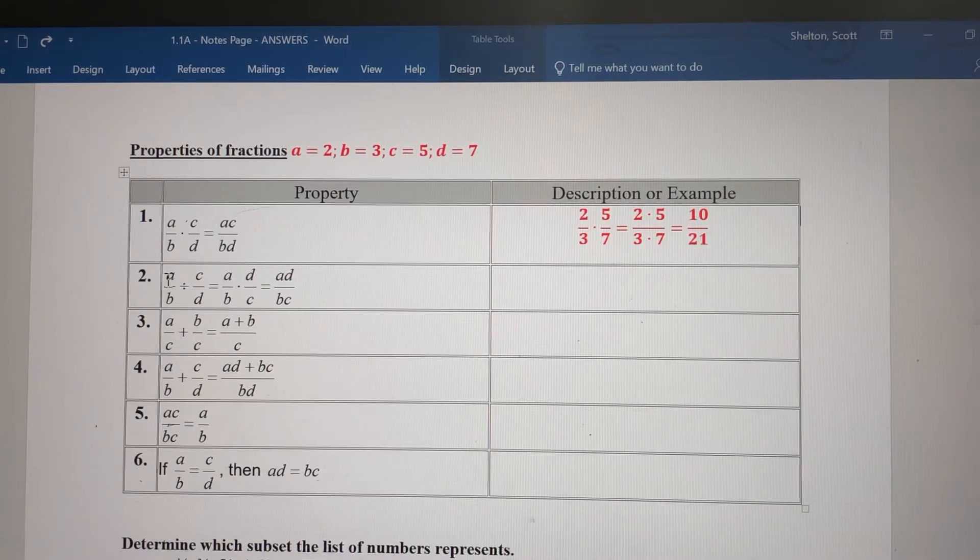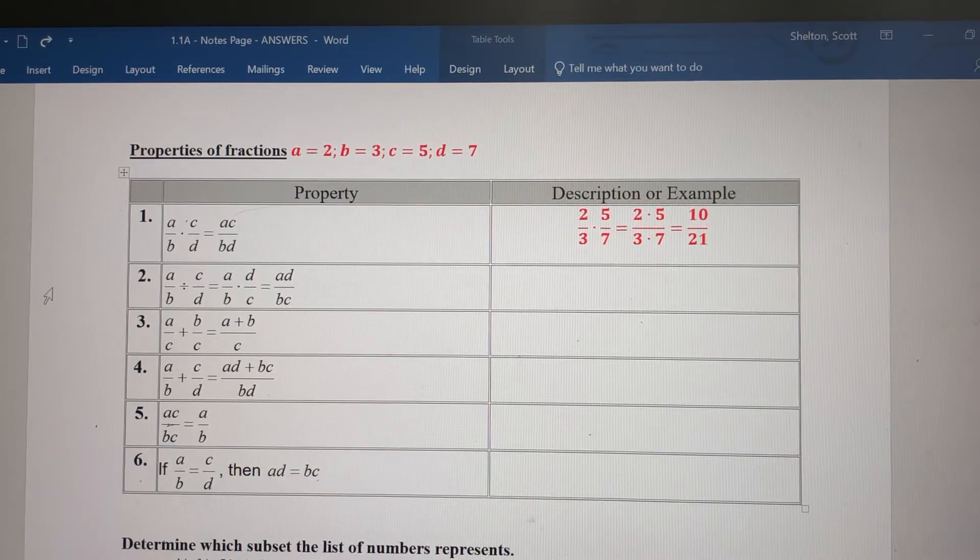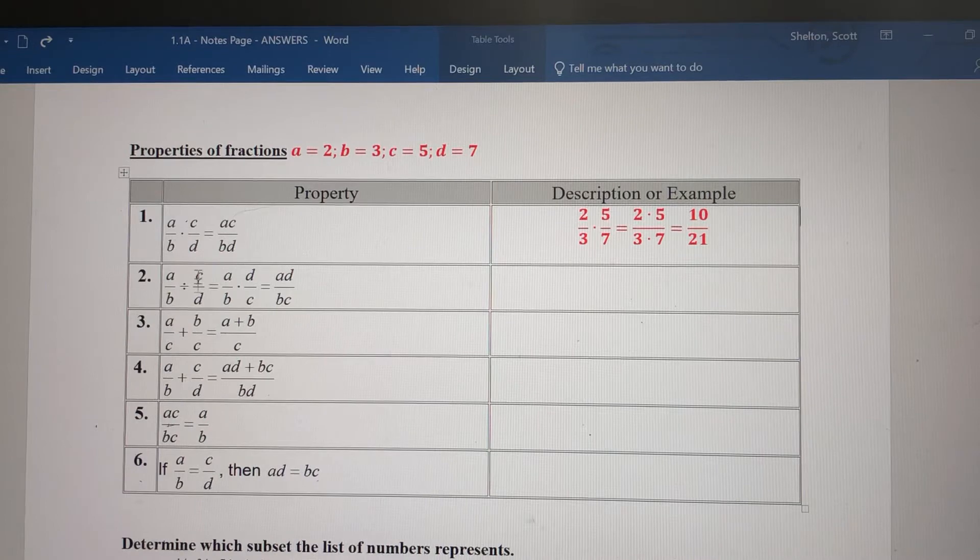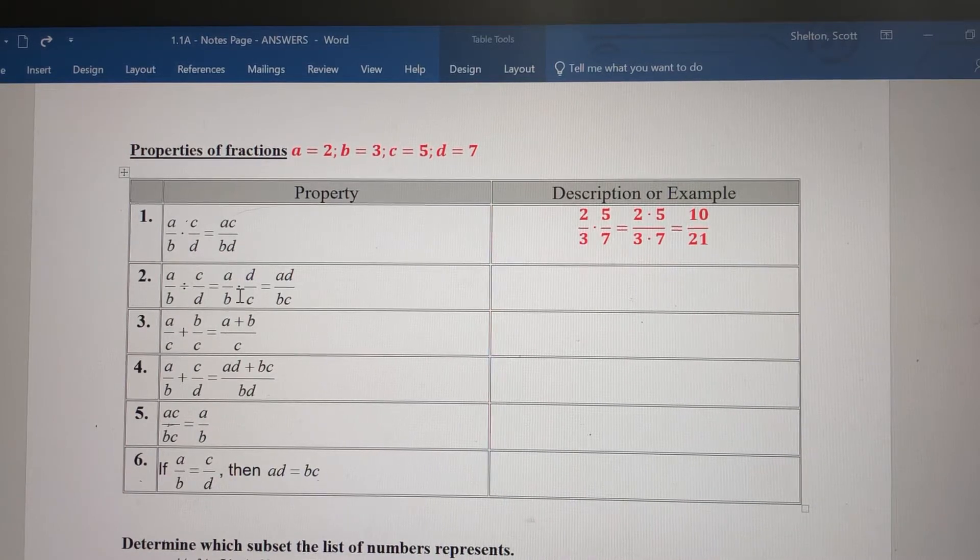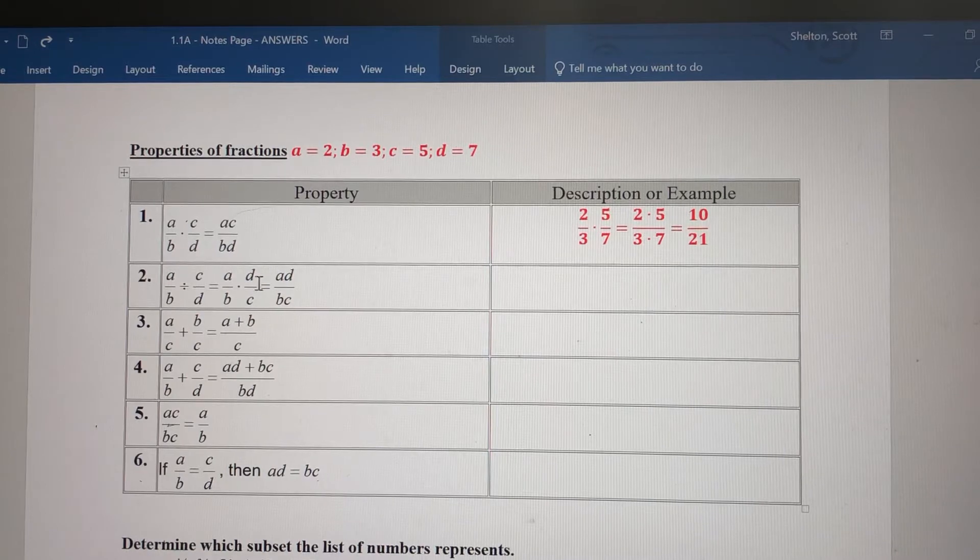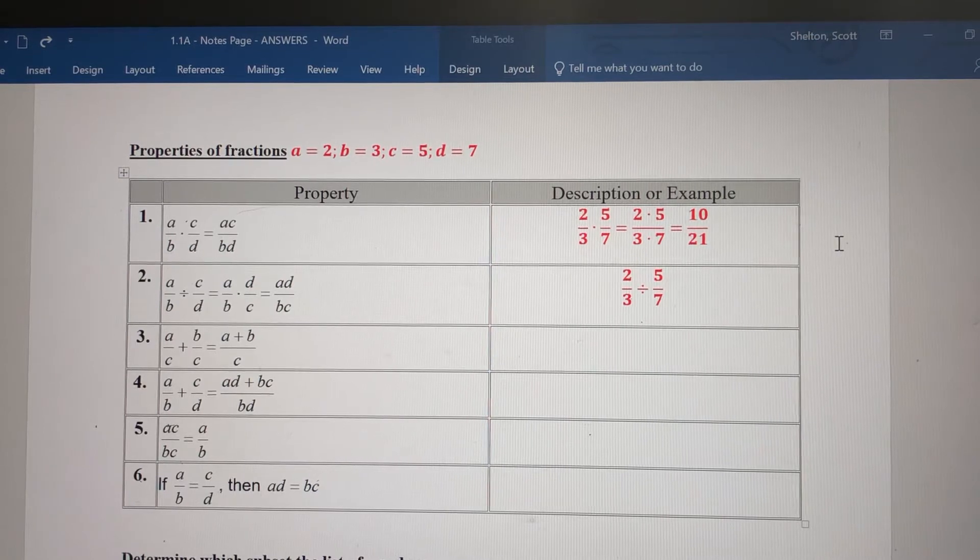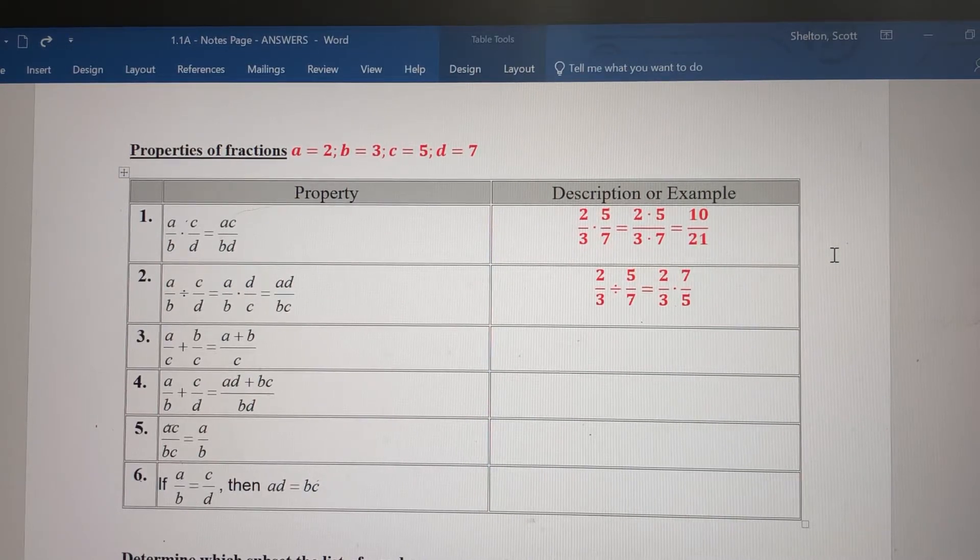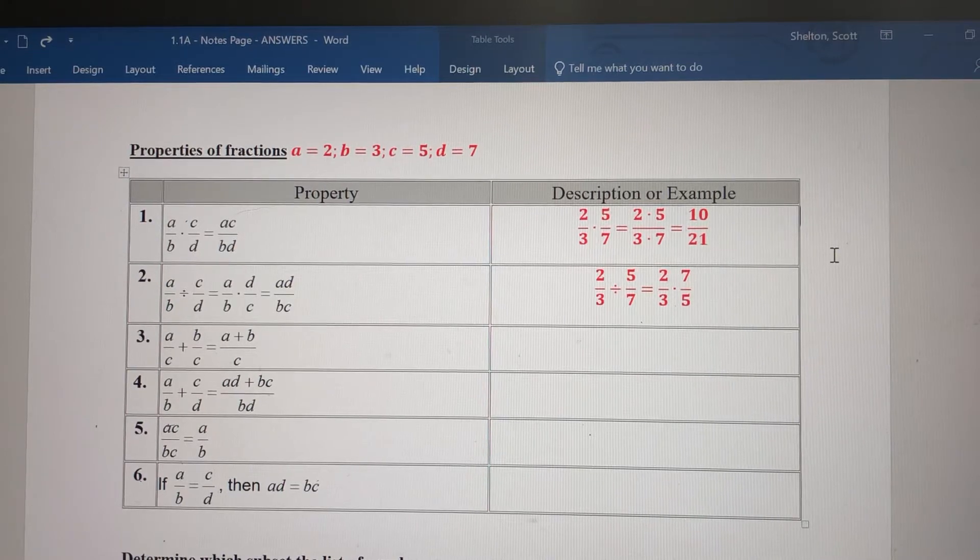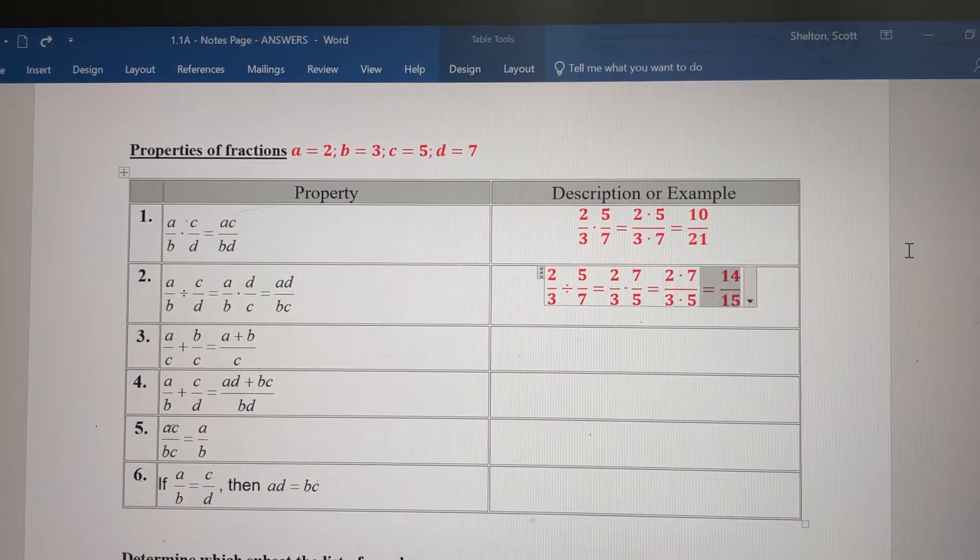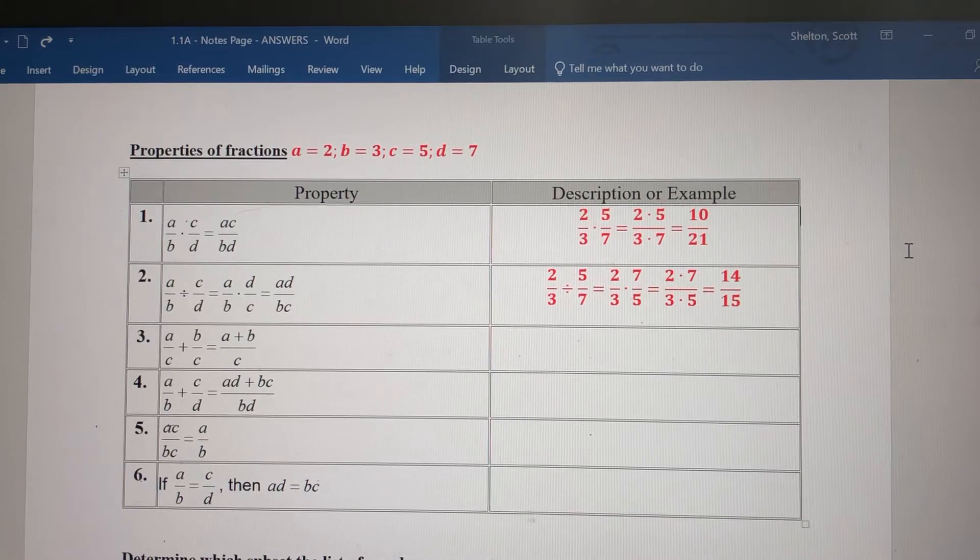Property 2: When you divide one fraction by another, A/B divided by C/D, change division to multiplication and take the reciprocal. Change division to multiplication, flip C/D to D/C, then use the property of multiplying fractions to finish. 2/3 divided by 5/7 becomes 2/3 times the reciprocal of 5/7, which is 7/5. Now use the first property: 2 times 7 is 14, 3 times 5 is 15. The answer is 14/15.